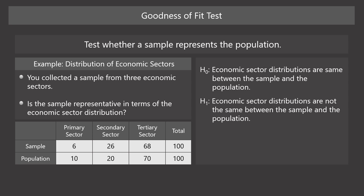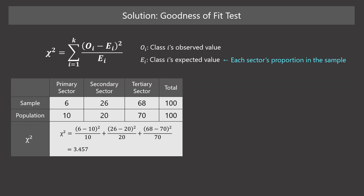The alternative hypothesis is that economic sector distributions are not the same between the sample and the population. As the second step, we set the significance level to 0.05. The test statistic used in the goodness of fit test is Chi-Squared, so we need to compute Chi-Squared.